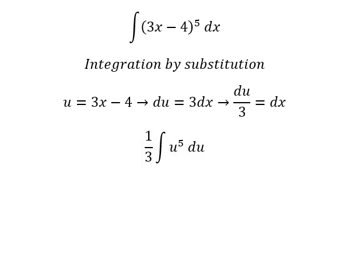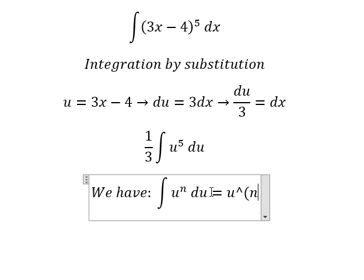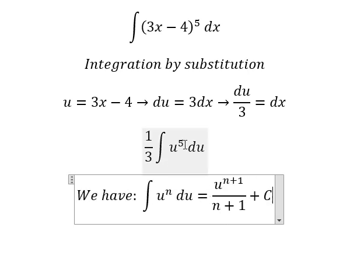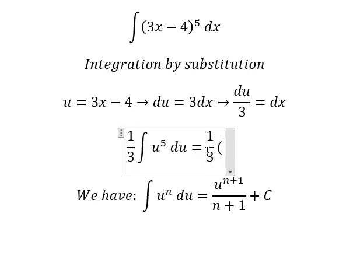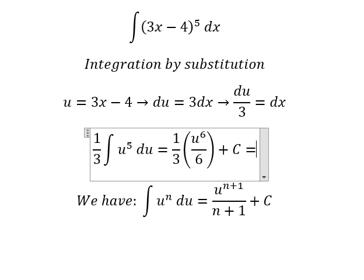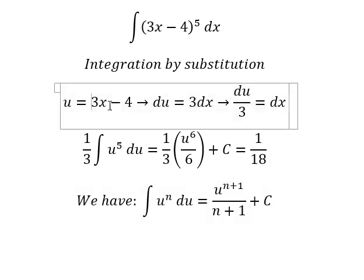Next we apply the power rule formula. We have u^5, so we add 1 to get 6. Then 1/3 times u^6/6 plus C equals 1/18 times (3x - 4)^6 plus C.